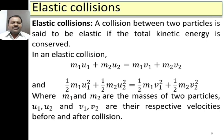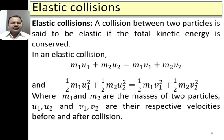Therefore: ½m₁u₁² + ½m₂u₂² = ½m₁v₁² + ½m₂v₂², where the left side is the total initial kinetic energy and the right side is the total final kinetic energy. The first term on the right indicates the final kinetic energy of the first particle and the second term indicates the final kinetic energy of the second particle. So in an elastic collision, total initial and total final kinetic energy are equal.